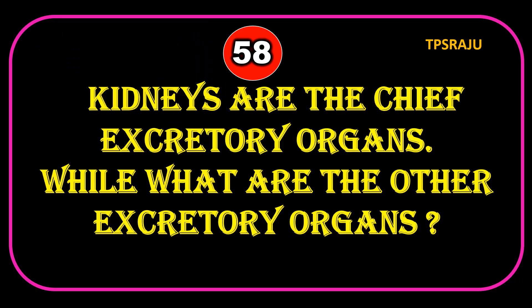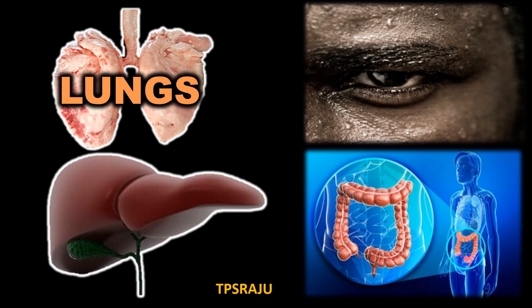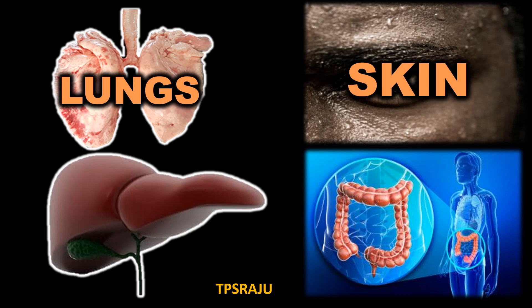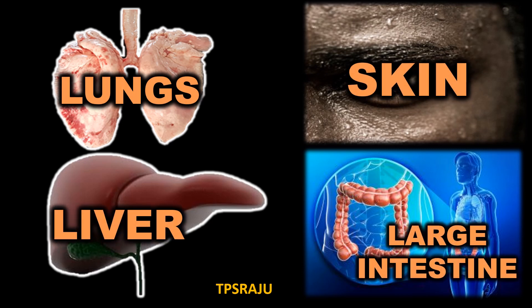Kidneys are the chief excretory organs. What are the other excretory organs? Lungs, skin, liver, and large intestine.